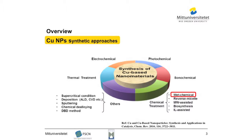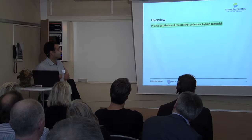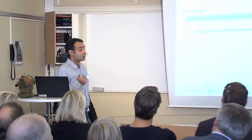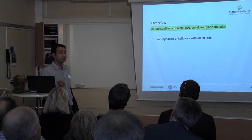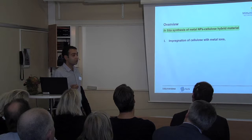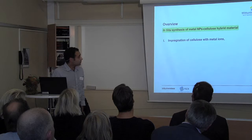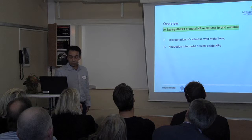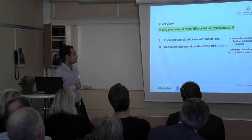An overview on in-situ synthesis of metal nanoparticles in hybrid materials indicates that most synthetic protocols consist of two main steps. The first step is impregnation of cellulose with metal ions, for which different cellulose materials with different structures and chemically modified cellulose have been used. This step can be quite time consuming and in some cases can take up to several days. The second step is reduction of metal ions into metal or metal oxide nanoparticles, done by using a reducing agent such as sodium borohydride or hydrazine, or physical-chemical reduction techniques such as UV treatment and heat treatment.